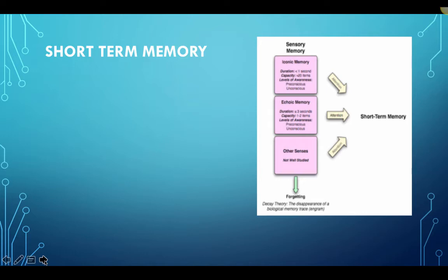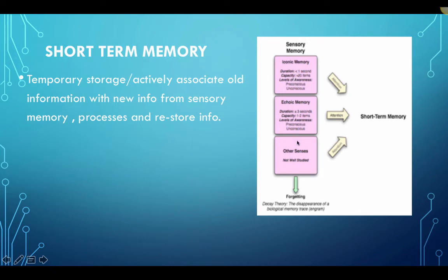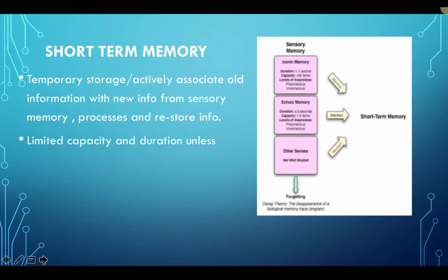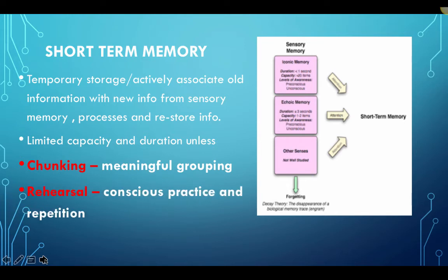Information that we pay attention to and that gets through our sensory memory system enters our short-term memory system — a temporary storage just long enough to decide whether it's important or relevant to us. The short-term memory has a very limited capacity of about seven items, and a duration of about 20 to 30 seconds, unless we chunk information — mentally group it together — allowing us to keep 10, 15, or 20 items. If we rehearse, consciously practice, or repeat information, we can keep it in there indefinitely.